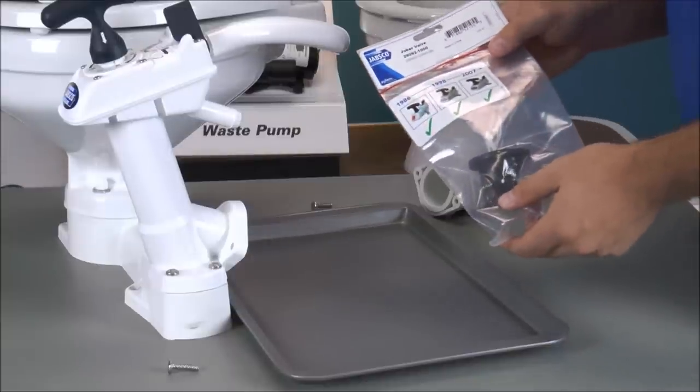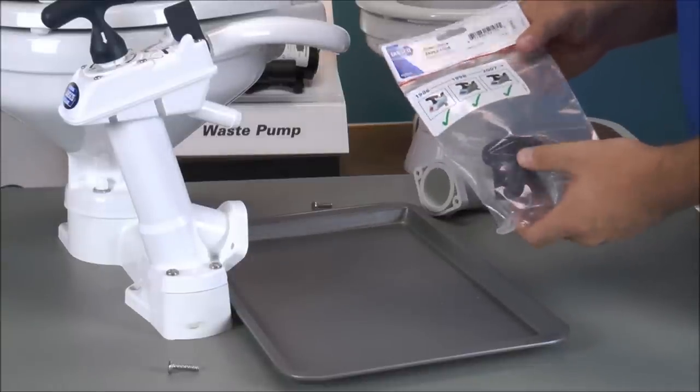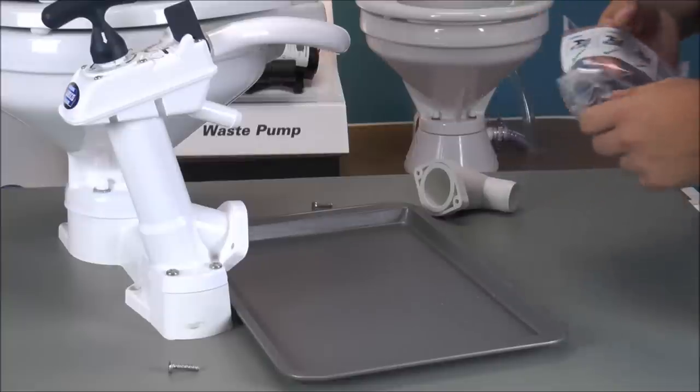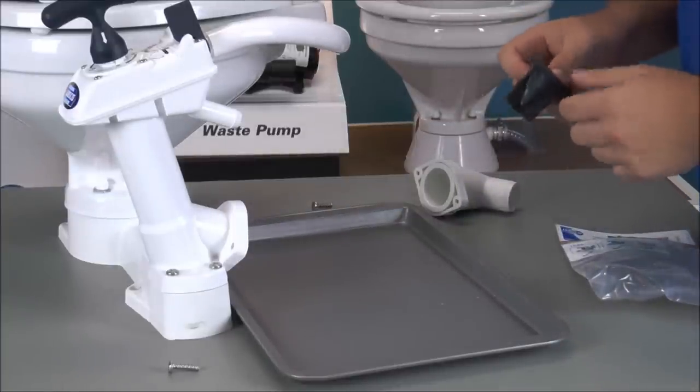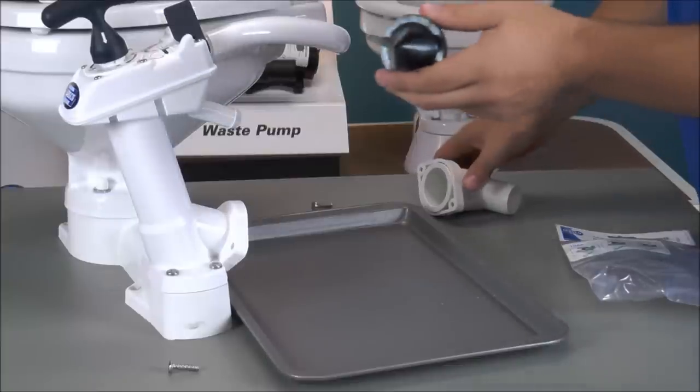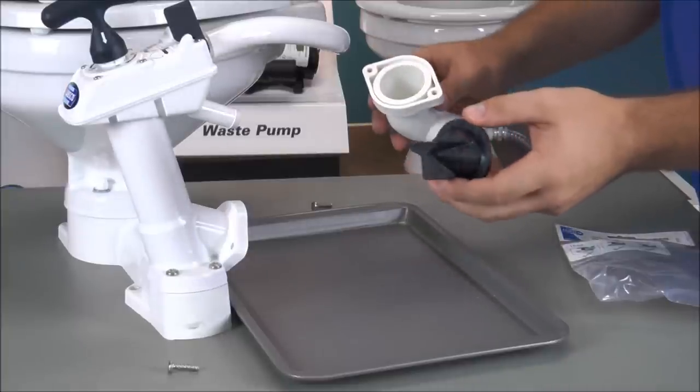Now that we have our 29092-1000 joker valve handy, it's time to reinstall the new one. Reinstallation is pretty simple. All we're doing is taking the triangular side and inserting it into the elbow.